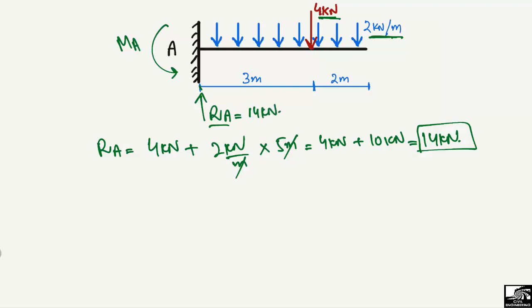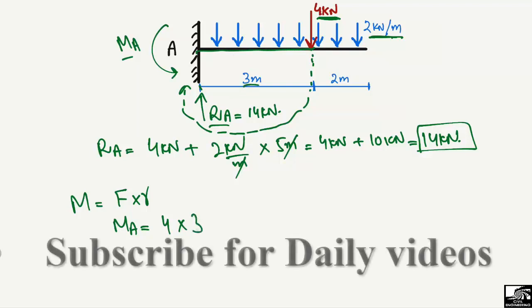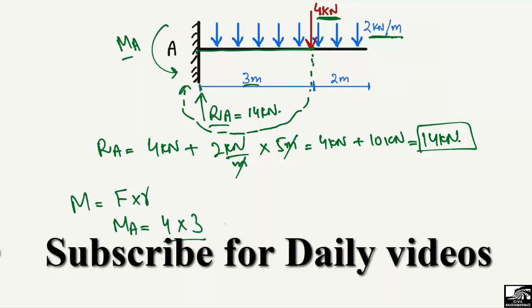Now for the moment value MA, we know that moment equals force multiplied by perpendicular distance. The moment at point A is caused by two forces. The first is the four kilonewton concentrated load acting at three meters from point A, giving four multiplied by three equals twelve kilonewton meter.